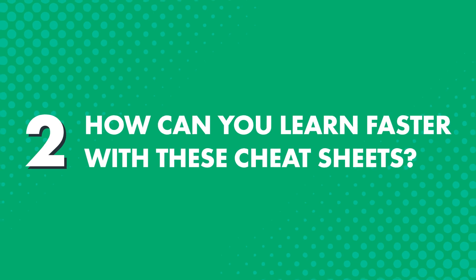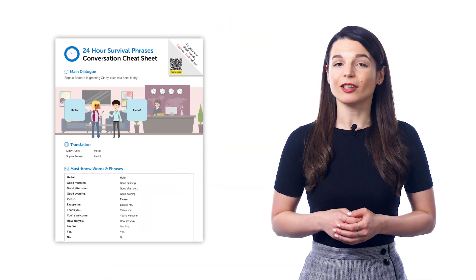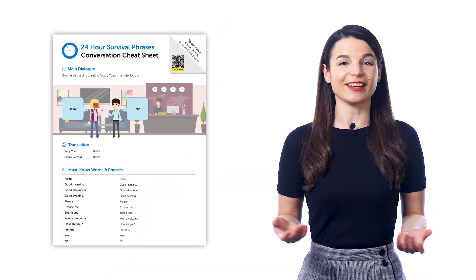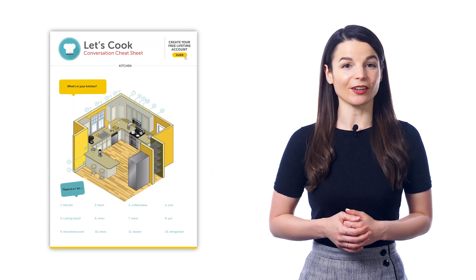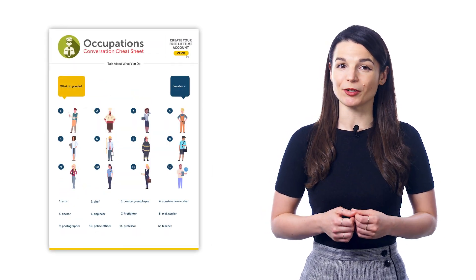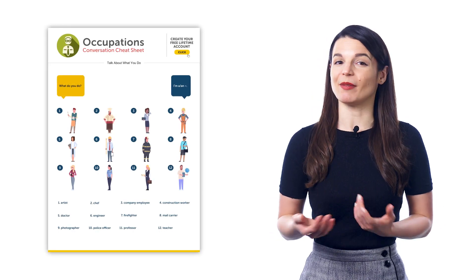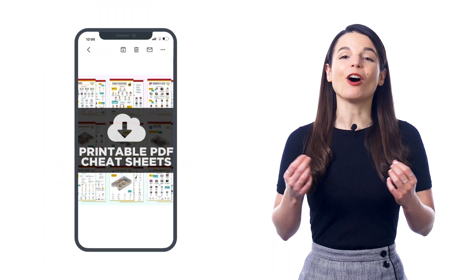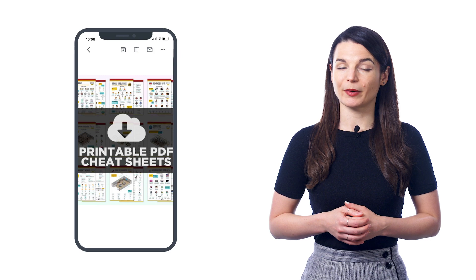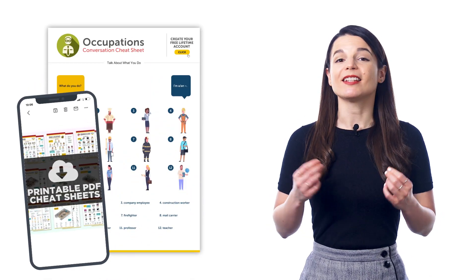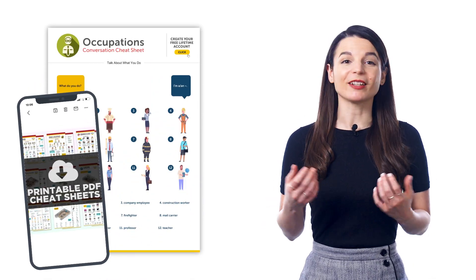Now how can you learn faster with these cheat sheets? Just download a cheat sheet, print it, keep it nearby, and glance through as much as possible. Eventually, you'll know all of the words and phrases in and out, simply because you've seen the words enough times. It's all about exposure to the language — the more you're exposed to the language, the better you'll remember it. And you can always save the PDFs to your device, but having physical cheat sheets makes it easy to pick one up and glance through.